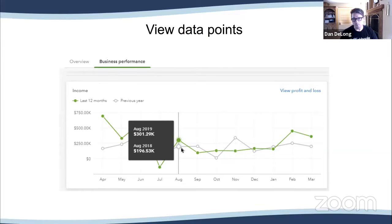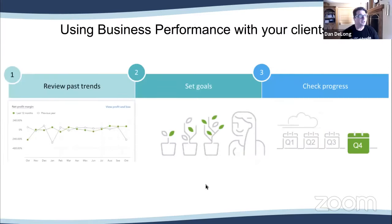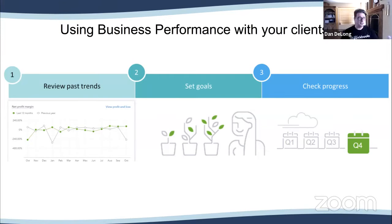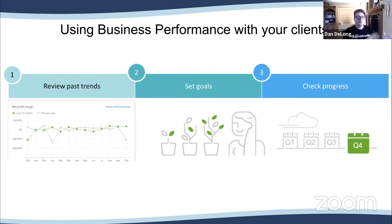On the trend, you can hover over each data point and it gives the detail of what that number actually is, so you can validate those figures. Using business performance with your client, you would use this as a way to review past trends — it's the conversation starter. When you have that quarterly, monthly, or annual review, use this as a conversation starter. It's like a rear-view mirror — this is where you want to set goals and then use that to check your progress as you're having these continuing conversations with your clients.